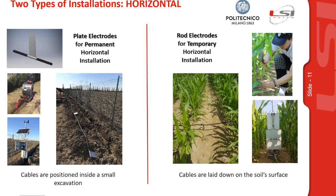Cables and electrodes can be installed in two different ways — horizontal and vertical — inside the core. For long-term installation, plate electrodes are more convenient as they can be buried inside a trench approximately 40 cm deep that is then covered. For temporary installation, road electrodes are more practical as they are fixed in the ground with the cable laid on the surface, making it easy to reposition the profile. However, this type of installation is riskier because exposed electrodes and cables can be damaged by animals, people, or vehicles.